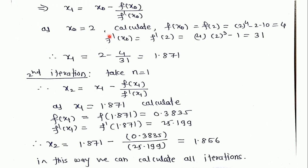As our initial guess x₀ = 2, we calculate the value at this point: f(x₀) = f(2) = 4, and f'(2) = 31. Substituting these values into the formula — x₀ - f(x₀) / f'(x₀) — we get x₁ = 1.871. This is the value after the first iteration.